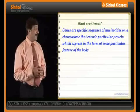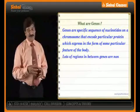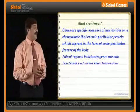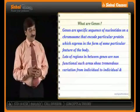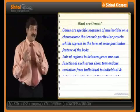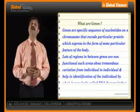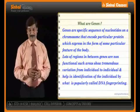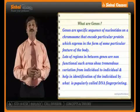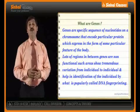When we talk about genes, you should know that a lot of regions in between genes are non-functional. Such areas show tremendous variation from individual to individual, and they help us in identification of individuals by a very popular word that we all know — DNA fingerprinting. With this, we have concluded our chapter on cell division and structure of chromosomes.